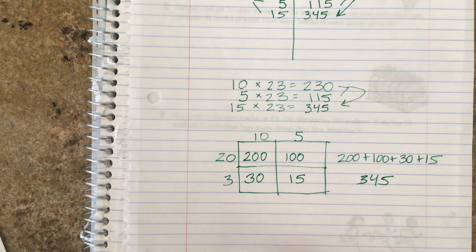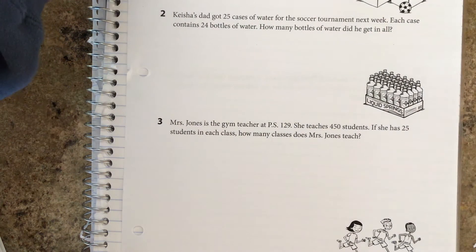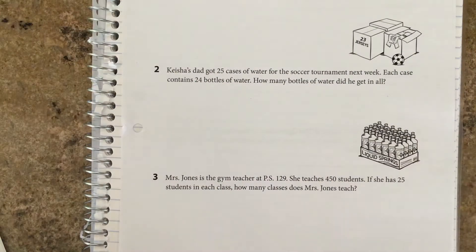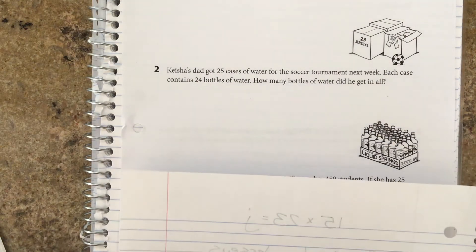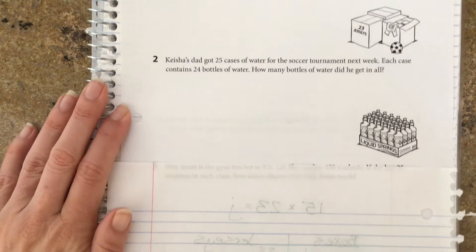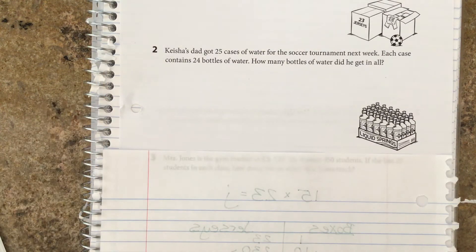We're going to move on to the next problem. Number two: Keisha's dad got 25 cases of water for the soccer tournament next week. Each case contains 24 bottles of water. How many bottles of water did he get in all? So again, you want to be thinking about an estimate, but first you want to be thinking about what the equation is asking us.